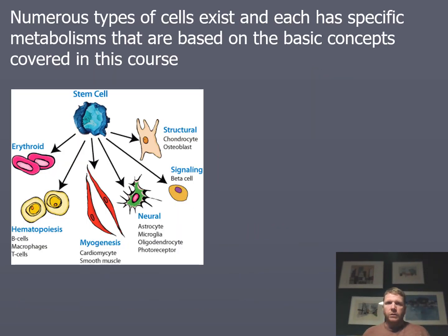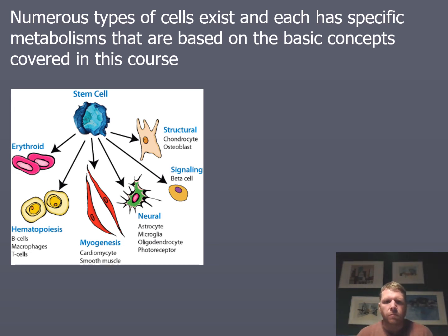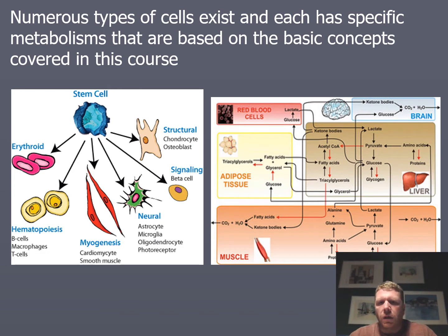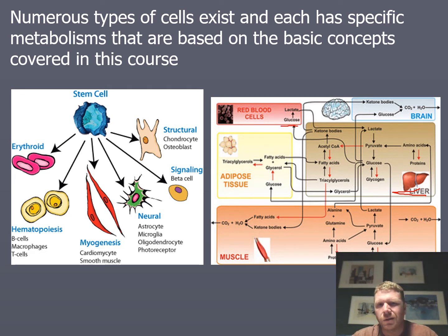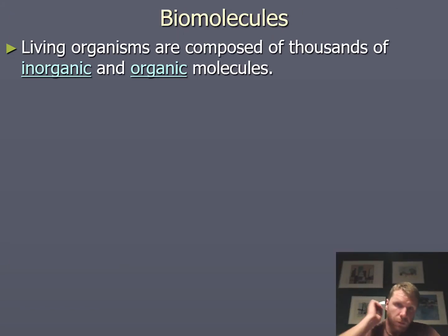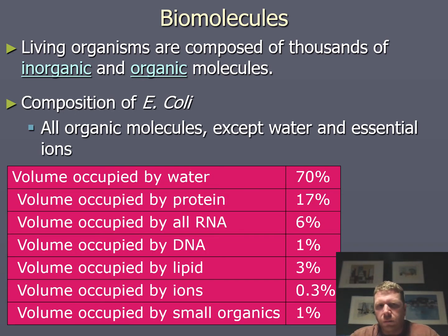Numerous different types of cells exist, each with different types of metabolism. A stem cell is your root cell that can be utilized to develop different types of tissue or cell types. As you can see here, muscle cells, liver cells, brain cells, red blood cells, and fat cells are all going to metabolize different molecules in different ways. For example, your liver tissue can process many different molecules, whereas red blood cells essentially just take glucose and make lactate.